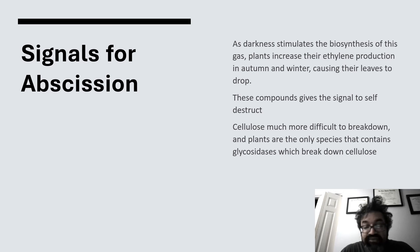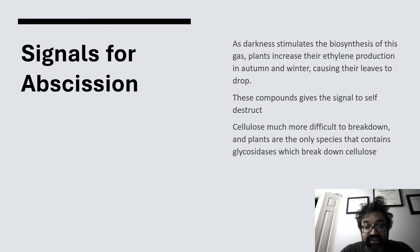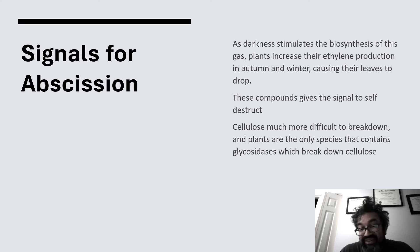What are the signals for abscission — what are the signals for leaves falling? This goes back to circadian rhythms. Darkness stimulates the biosynthesis of the auxins and of the gas ethylene, so the plants increase production. As the circadian rhythms change, plants increase the ethylene production in autumn and winter, causing their leaves to drop. It's like a self-destruct signal.